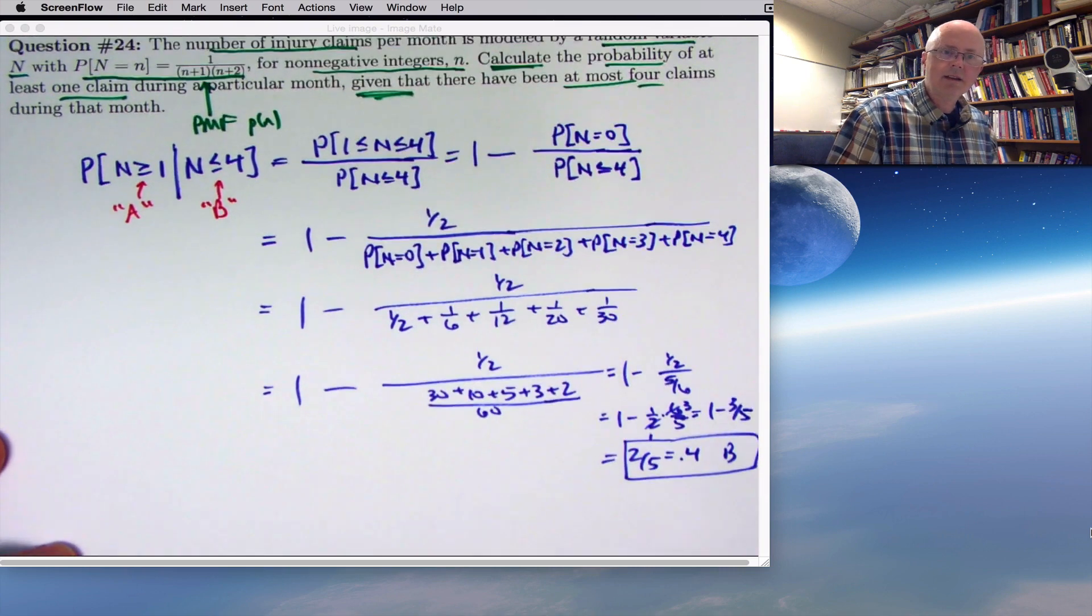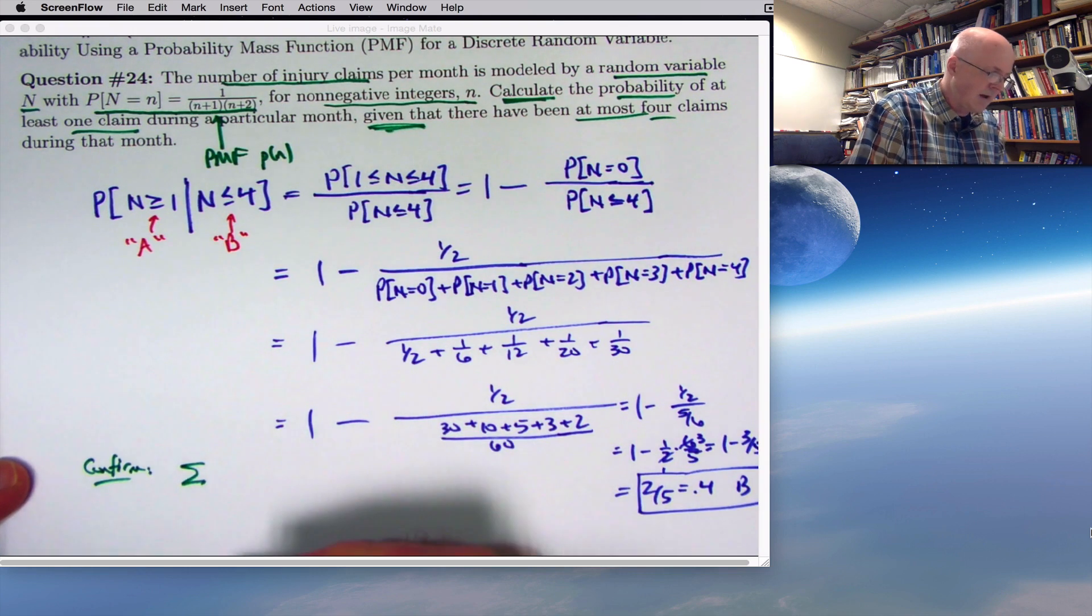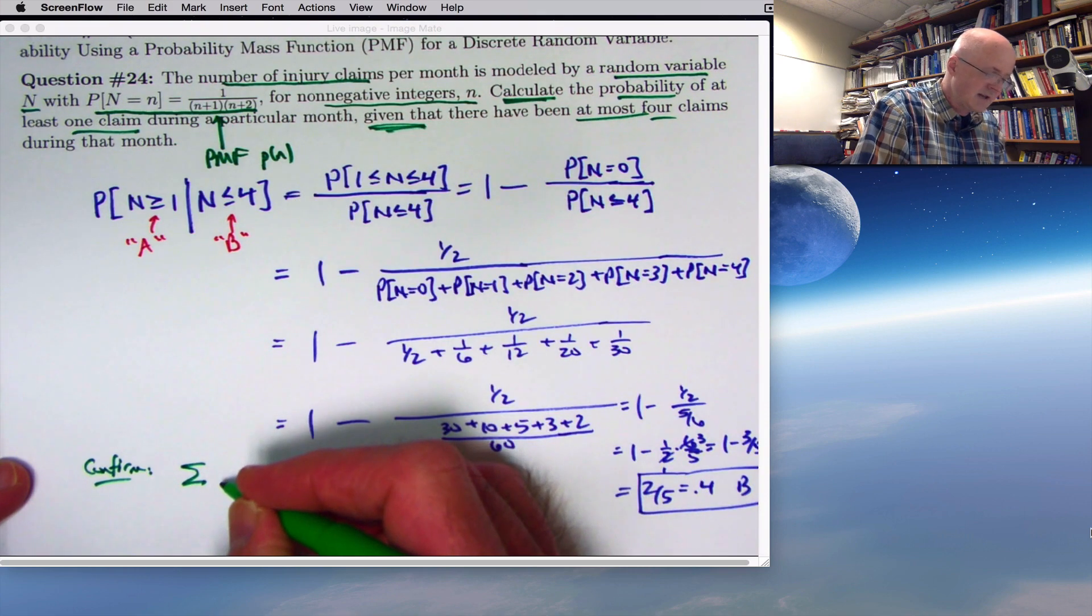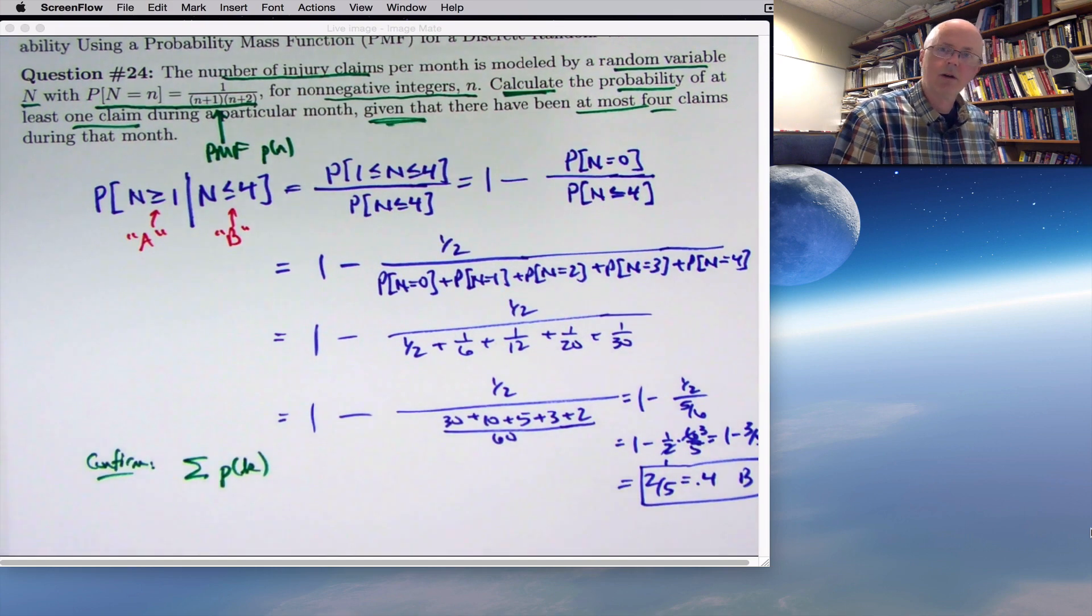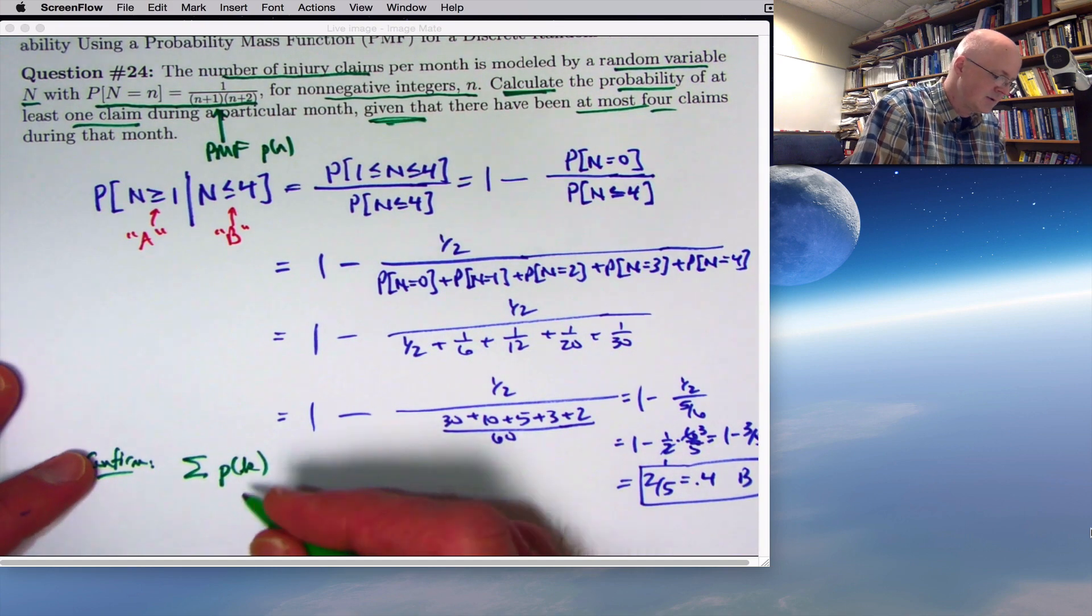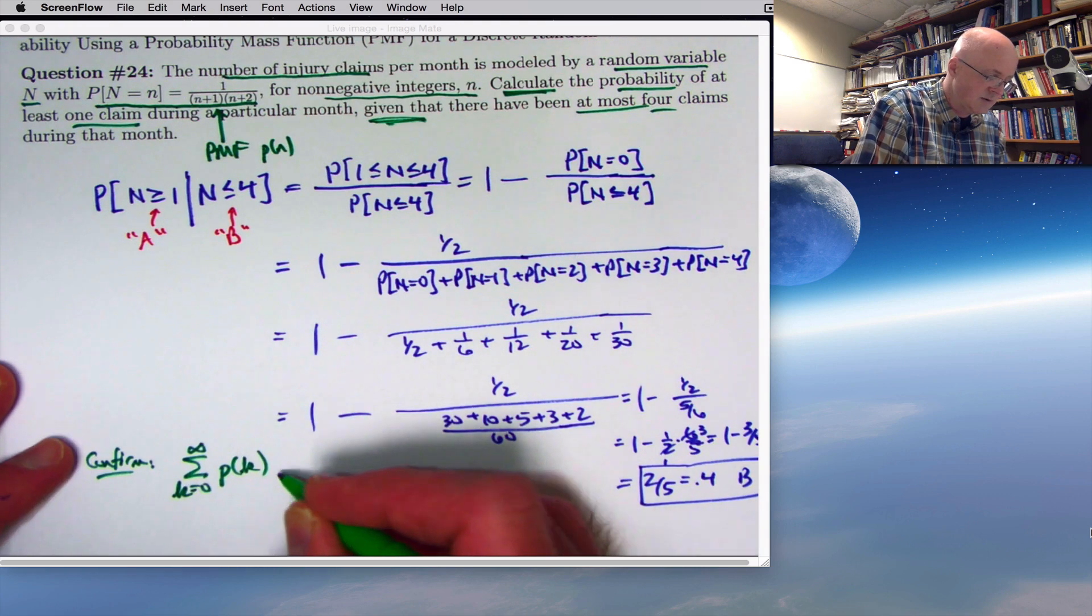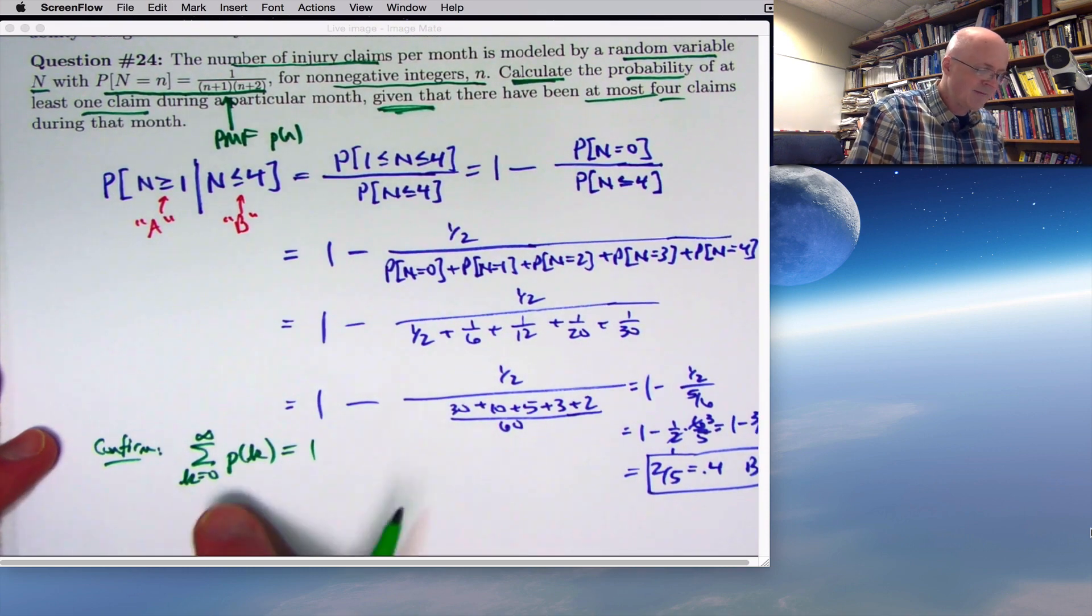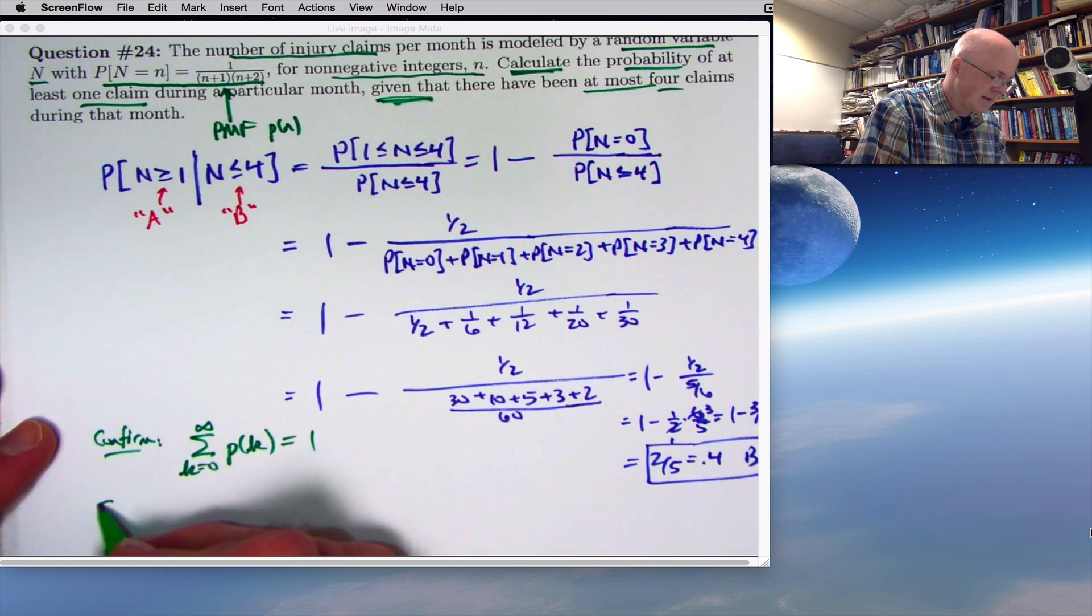So the key thing, we want to confirm that the sum of the values of the PMF equal 1. The sum of P of n as n goes from 1 to infinity. I'm going to use actually P of k here, because I'm also going to talk about something called an nth partial sum, so I'm going to use a different letter here. We want to confirm that this summation, k goes from 0 to infinity, equals 1. That's the goal. I haven't confirmed it yet.